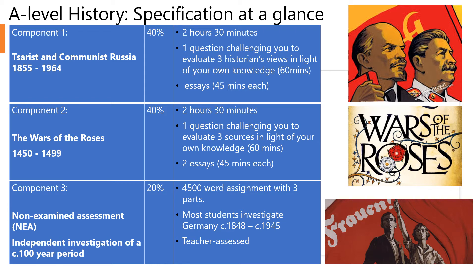Rather than jumping through hoops, extended writing is clearly a key part of the assessment, and you need to ask yourself whether this is one of your key skills. In the NEA, which only makes up 20%, you have to write a 4500-word assignment. Although that appears to be a long piece of work, it's actually divided up into three parts, and keeping under that word limit across your three parts will be one of your biggest challenges.